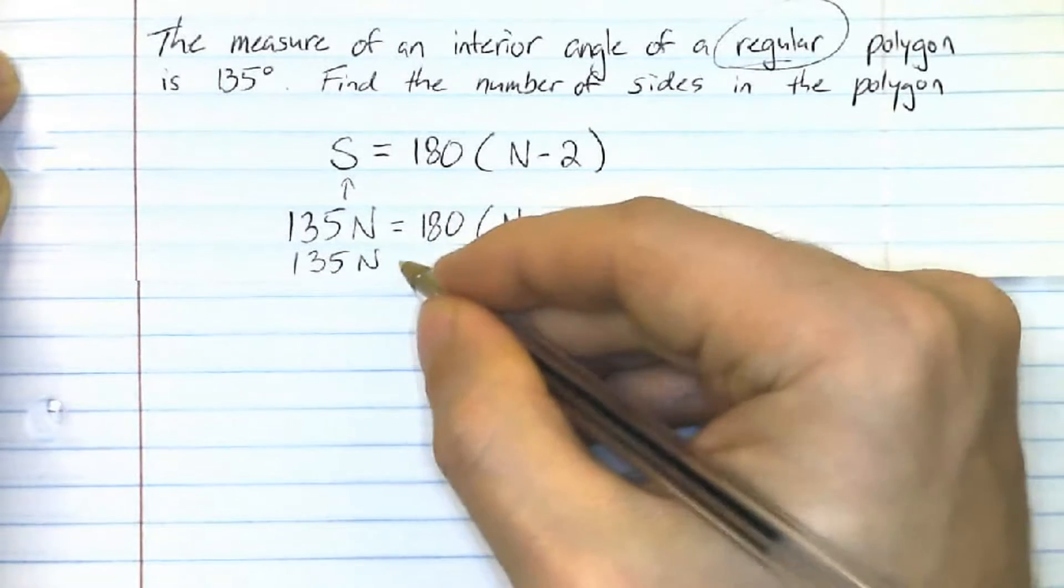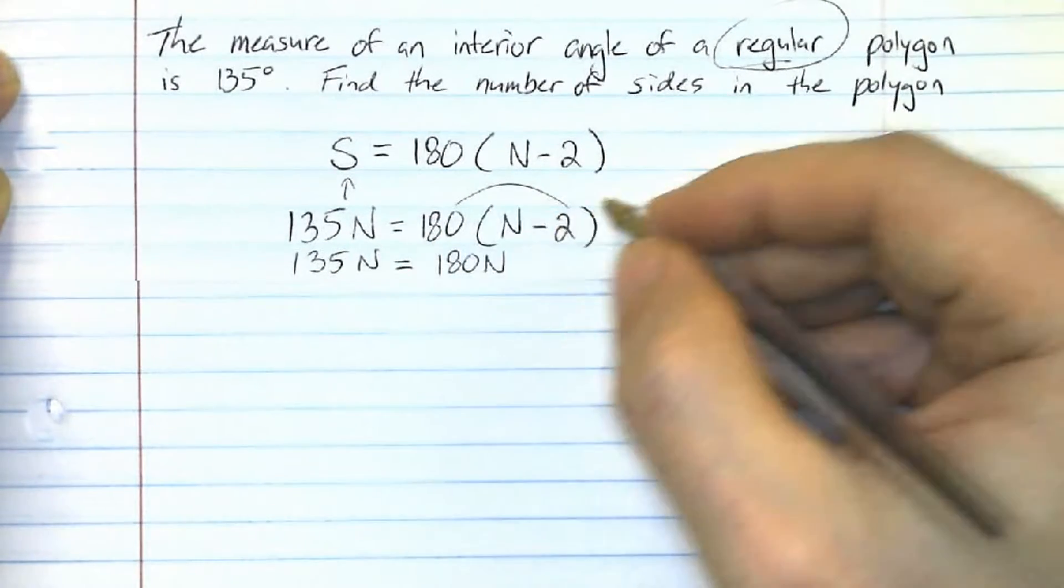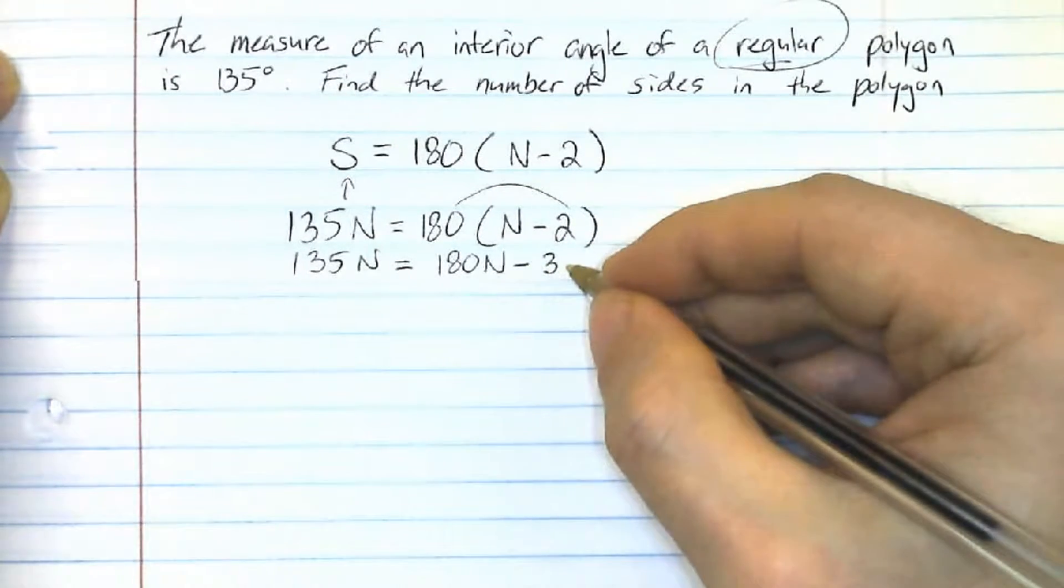First, I've got 135N equals, and using distributive property, I have 180N. And here, 180 times minus 2, that's going to be minus 360.